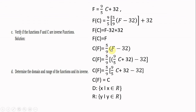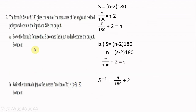Now verify C(F(C)): substitute F = (9/5)C + 32 into C = (5/9)(F − 32). That gives (5/9)[(9/5)C + 32 − 32] = (5/9)(9/5)C. The fractions cancel, giving C. Both compositions confirm F and C are inverses. The domain and range are both the set of real numbers.